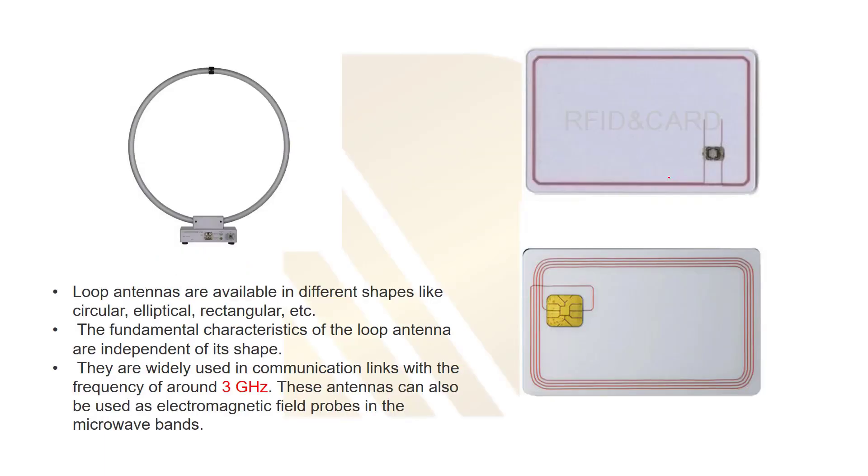What about the loop antenna? Loop antennas are available in different shapes like circular, elliptical, and rectangular. One of the best examples here is RFID card. You have this card which has the chip inside it.